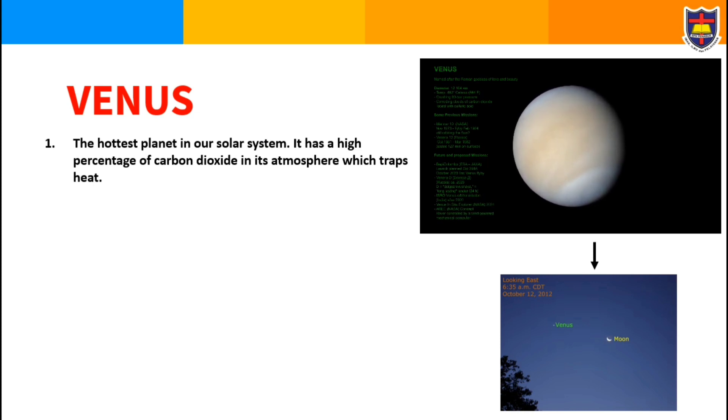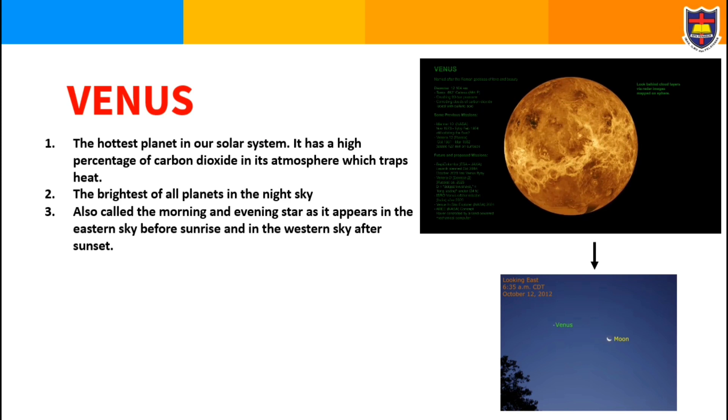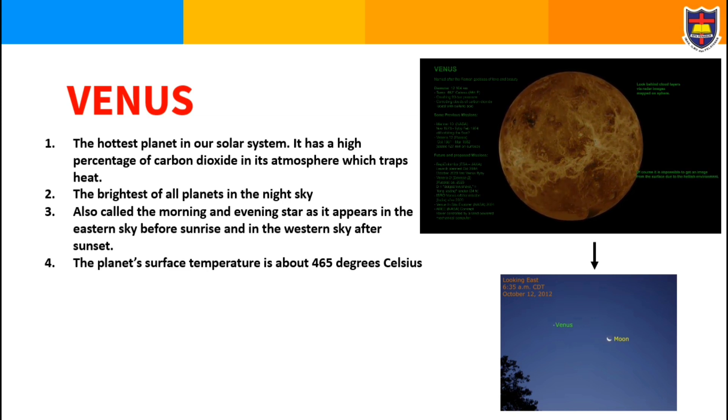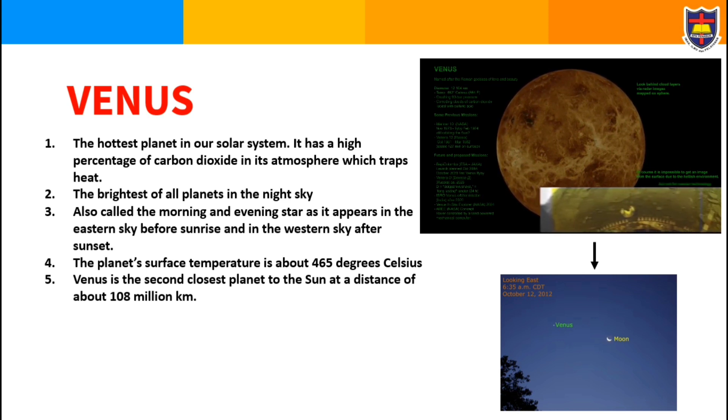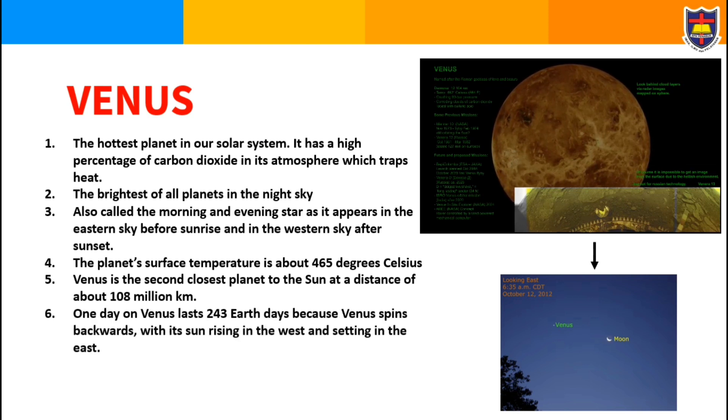Venus is the brightest of all planets in the night sky and also called the morning and evening star, as it appears in the eastern sky before sunrise and in the western sky after sunset. The planet's surface temperature is about 465 degrees Celsius. Venus is the second closest planet to the Sun at a distance of about 108 million kilometers. One day on Venus lasts 243 Earth days because Venus spins backward, with its sun rising in the west and setting in the east.